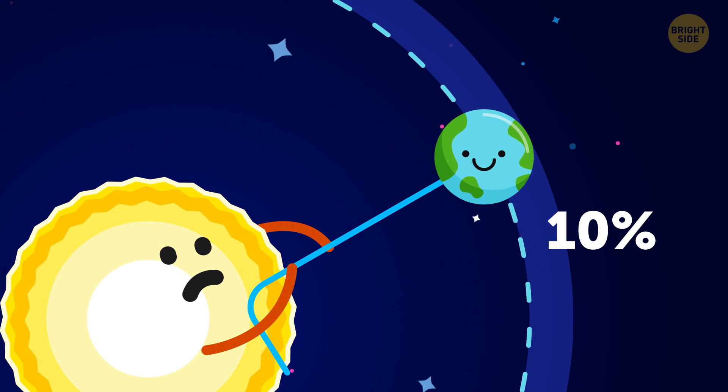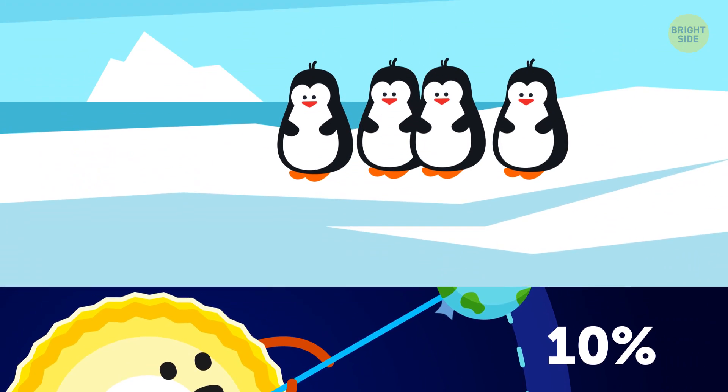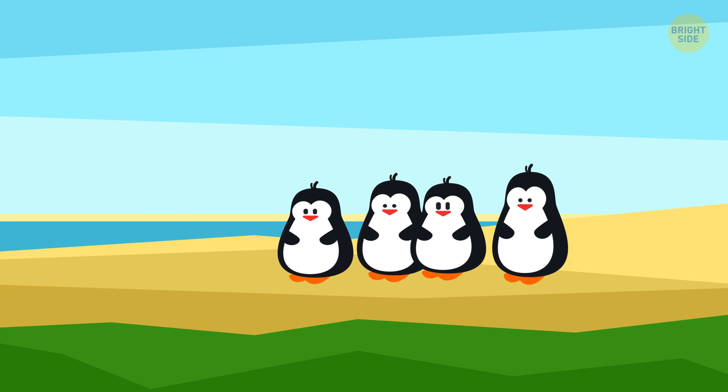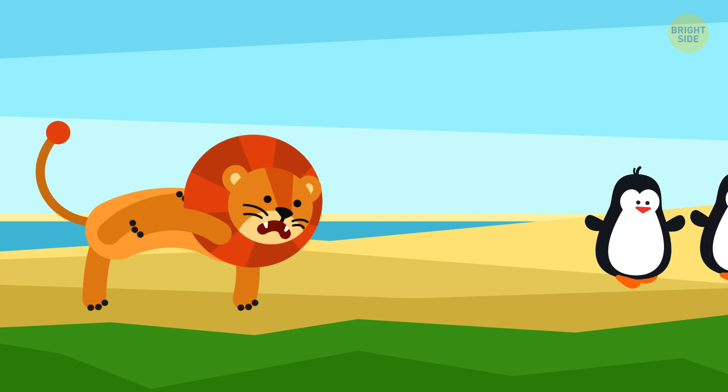As a result, our planet would start traveling about 10% closer to the Sun. It would trigger even more disastrous climate changes which, in turn, would lead to a lack of food and other serious problems.